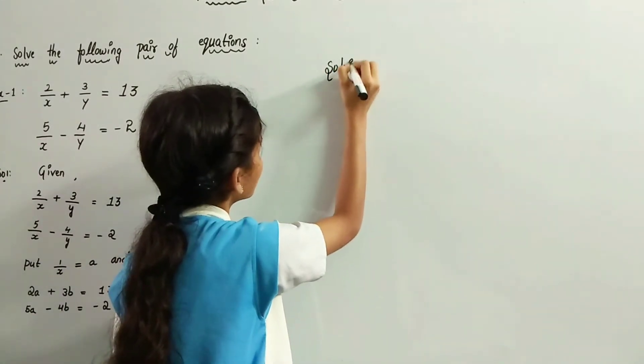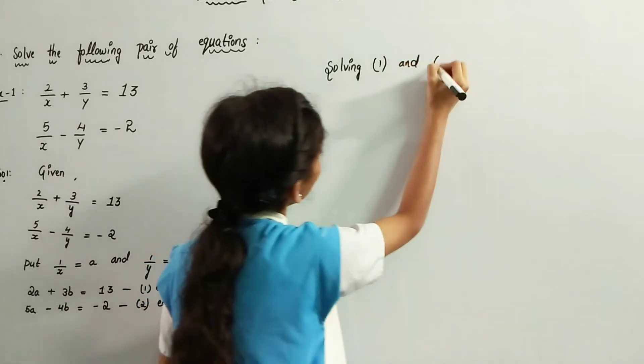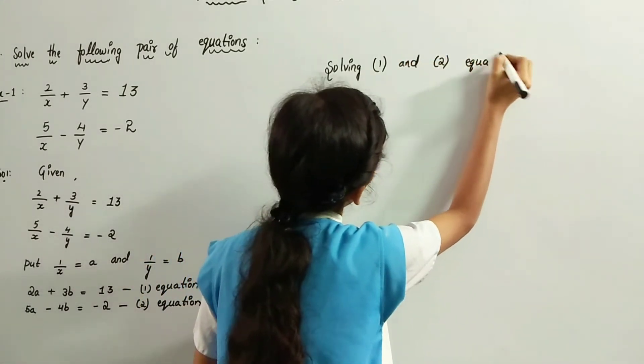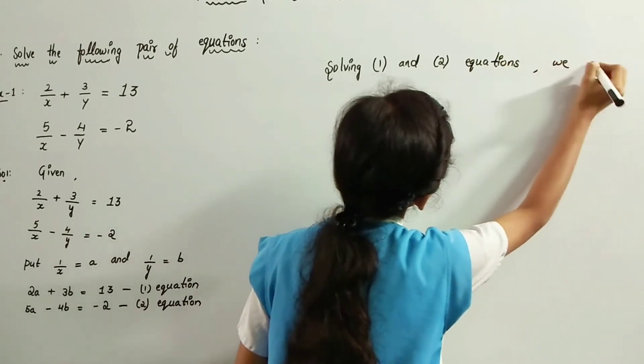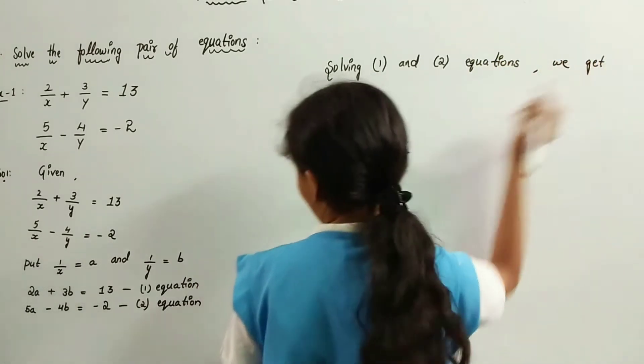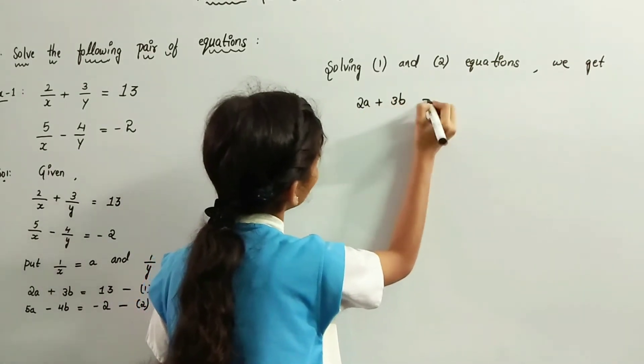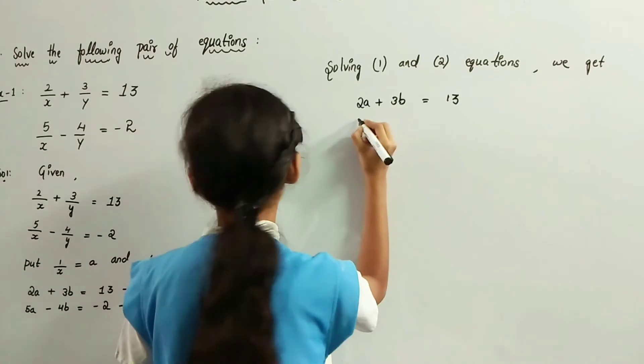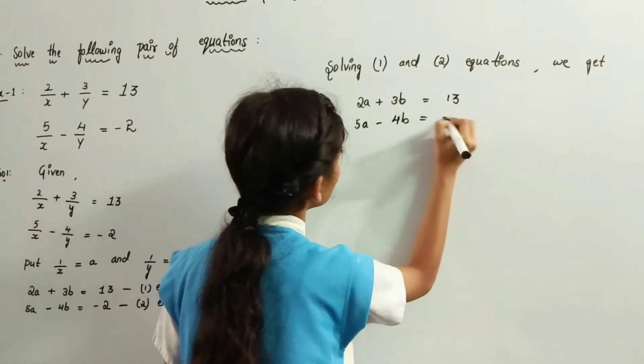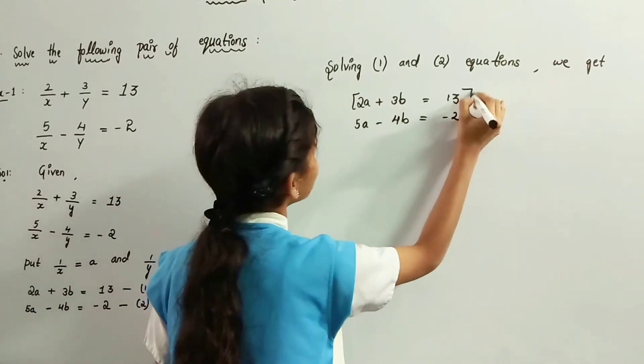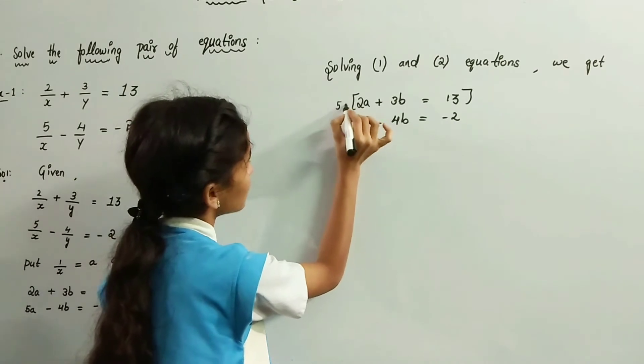Solving equations 1 and 2, we get 2a plus 3b equals 13, and 5a minus 4b equals minus 2. Multiply the first equation with the second equation's first number, that is 5.